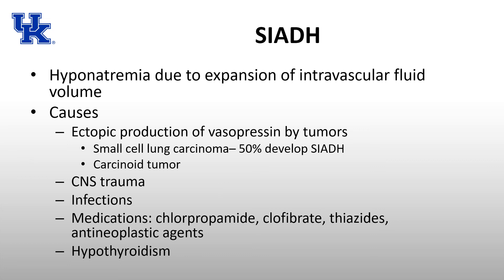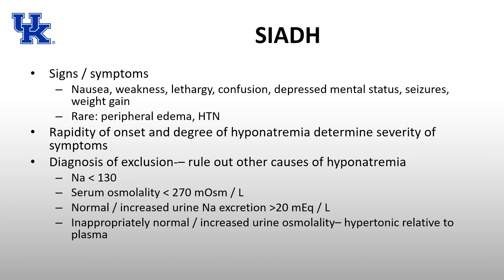There are a couple of things that can cause SIADH. One we think of most frequently is production of vasopressin by tumors, specifically small cell lung carcinoma — about 50% of patients diagnosed with small cell lung carcinoma develop SIADH. Carcinoid tumor can also result in SIADH. Other causes include trauma, infections, certain medications including chlorpropamide, clofibrate, and thiazides, as well as a few antineoplastic agents, and hypothyroidism.